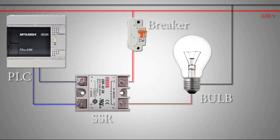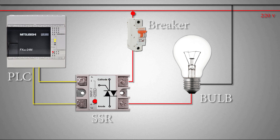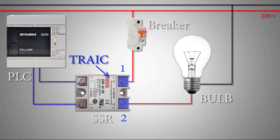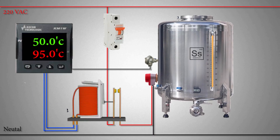Now let's see an example to understand how an SSR relay switches AC loads on and off. In this example, the SSR relay is used to switch a bulb on and off. When a control signal is applied at the input terminals of the SSR relay, AC voltage will be applied to the bulb via the power terminals — terminal 1 and terminal 2. The power terminals of the SSR relay don't have any moving contacts inside; instead, it has a triac which allows the current to pass through the SSR relay.